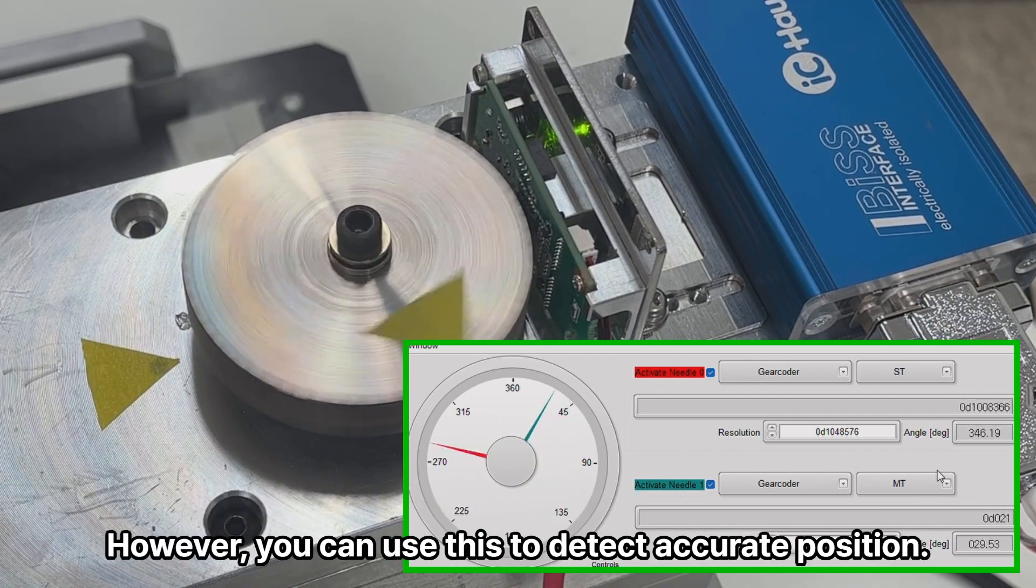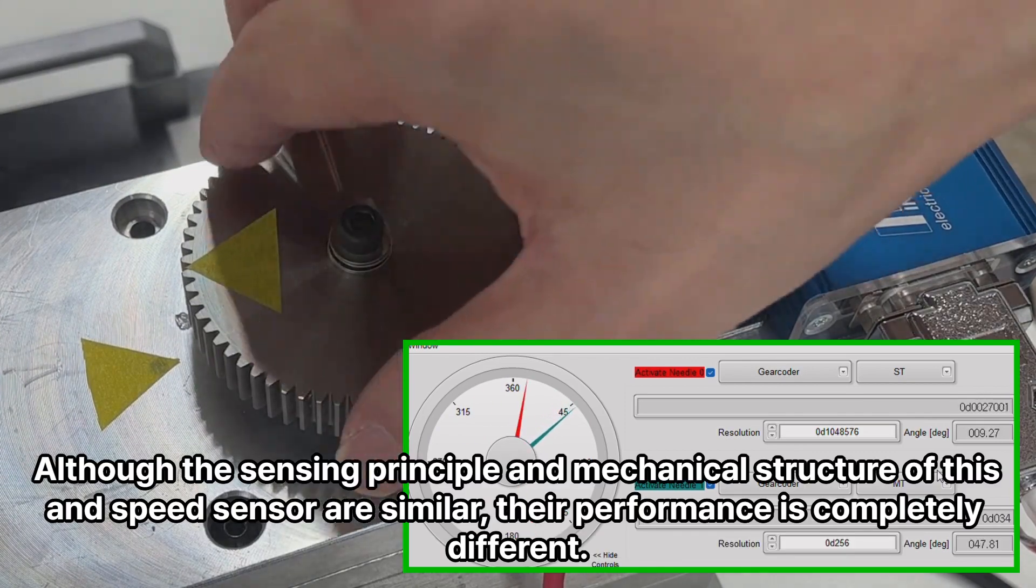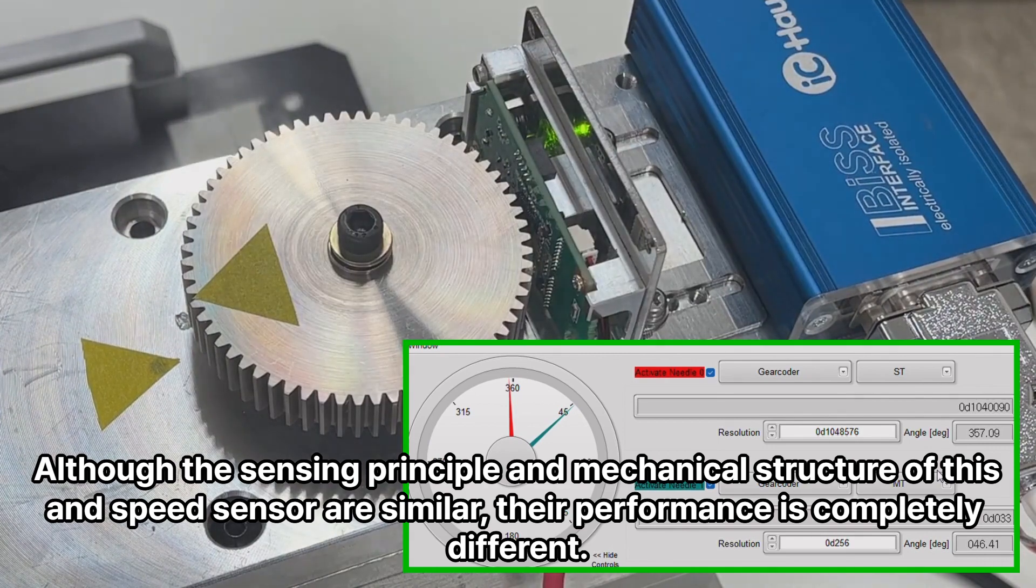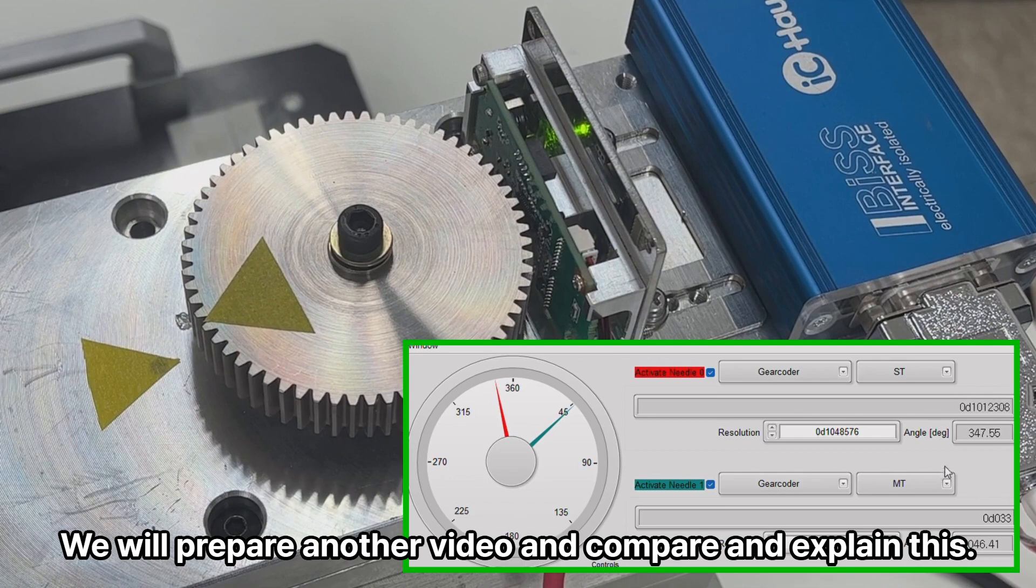However, you can use this to detect accurate position. Although the sensing principle and mechanical structure of this and speed sensor are similar, their performance is completely different. We will prepare another video and compare and explain this.